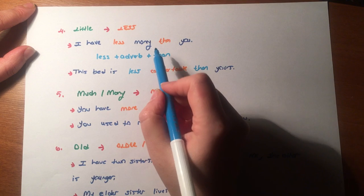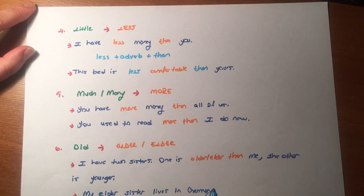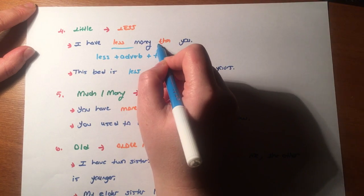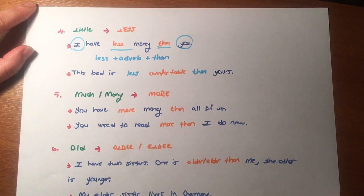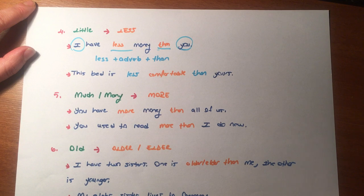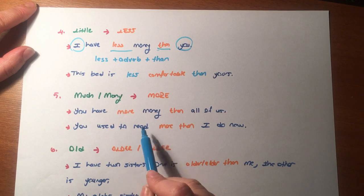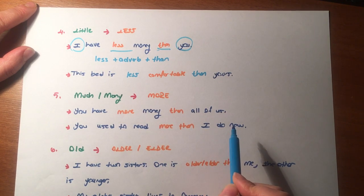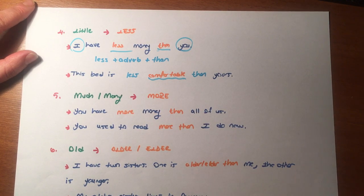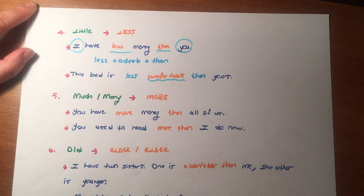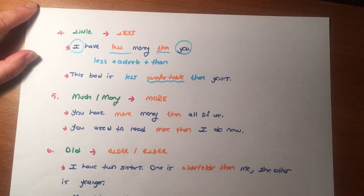Little — comparative: less. I have less money than you — comparing your money and my money. This bed is less comfortable than yours — adjective de kullanabiliriz. Bu yatak seninkinden daha az rahat dedik. 'Less than' means 'daha az'.